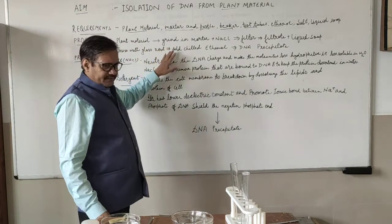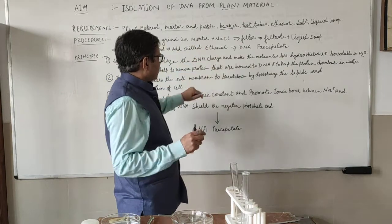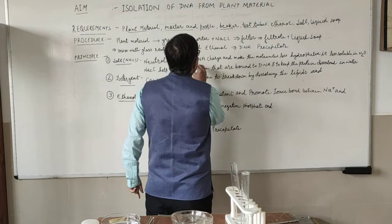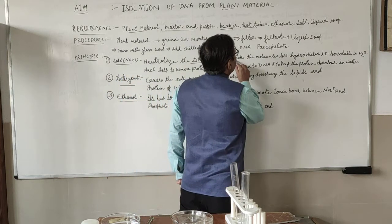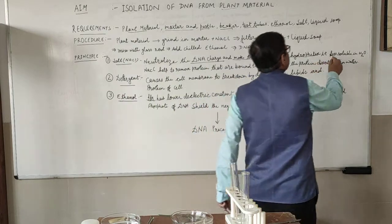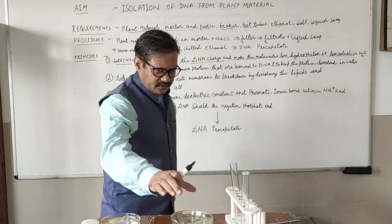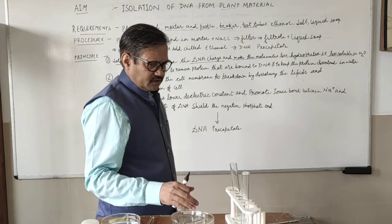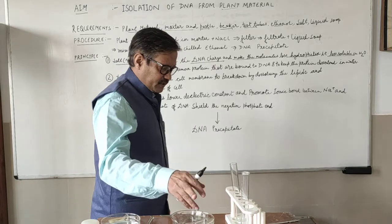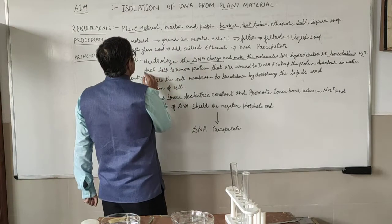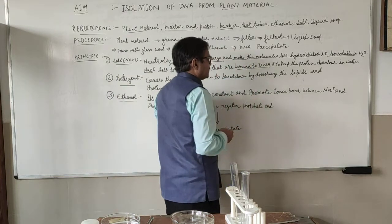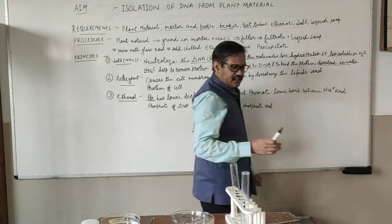After that we add some chilled ethanol. First, see what is the role of salt. Salt neutralizes the DNA charge and makes the molecule less hydrophilic — that is, less soluble in water. The second role of NaCl is to remove proteins that are bound to the DNA and keep the proteins dissolved in water.